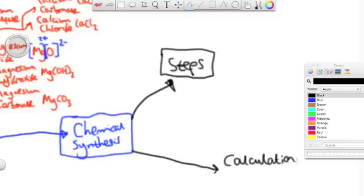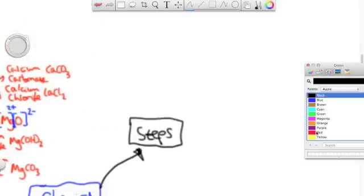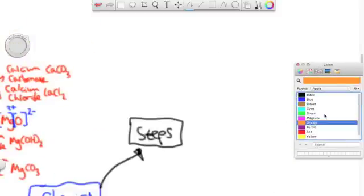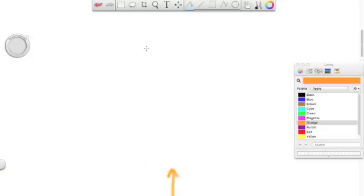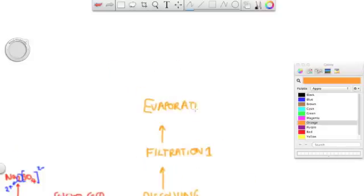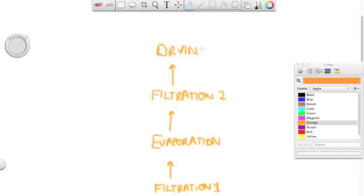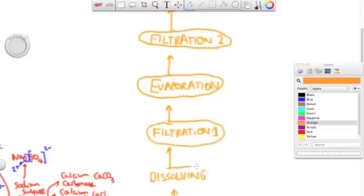We're now looking at steps of purification in chemical synthesis, and some calculations. The main steps in purification include dissolving, the first round of filtration, evaporation, a second round of filtration, and then finally drying. And we'll explore those steps one by one.